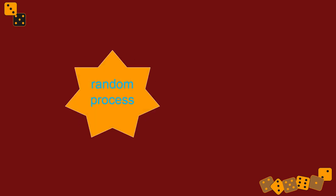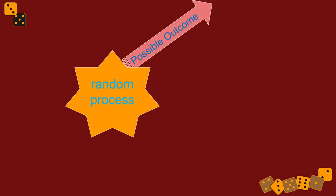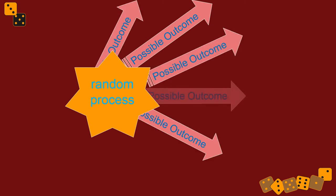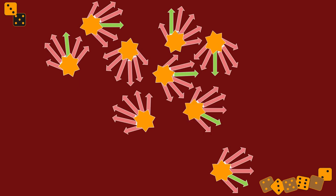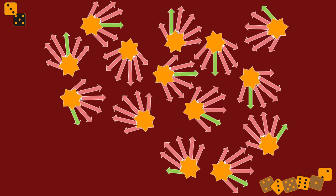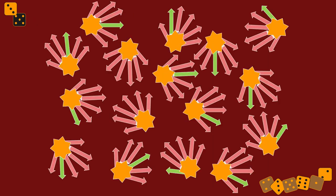We've got this random process that we focus on that can have multiple outcomes. We're interested in a particular outcome, and we look at the actual outcome and ask: how likely was that? What happens if we multiply all sorts of random processes? Sometimes they happen the way we're interested in, sometimes they don't. We want to describe the probabilities — like what's the probability of 12 of these happening this way, or three or fewer. That's where probability distributions come in.